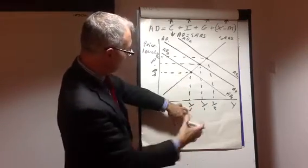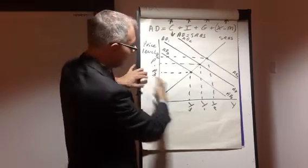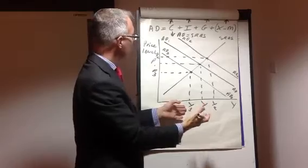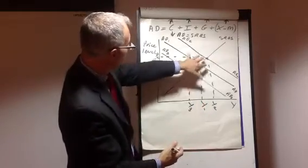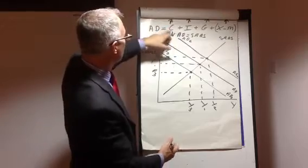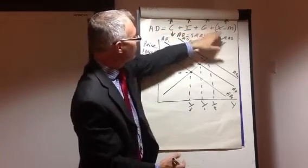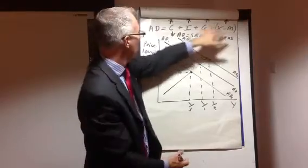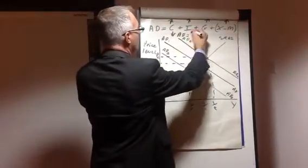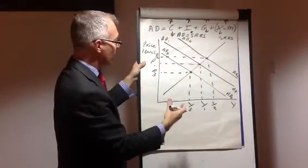So, again, we benefit from lower inflation perhaps, a lower price level, but we suffer because output has fallen. So, aggregate demand here shifted to the left because of a fall in consumption, or investment, and or government expenditure, and or net exports. A fall in each of these components will reduce aggregate demand and shift aggregate demand to the left.